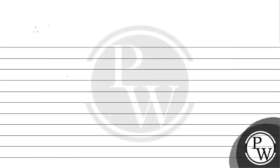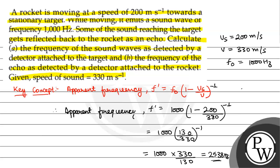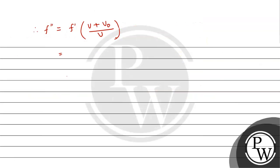The frequency of echo will be equal to f dash multiplied by v plus v observed divided by v. F dash we have found it at 2538 Hz. This will be equal to 2538 multiplied by 330 plus 200 by 330.